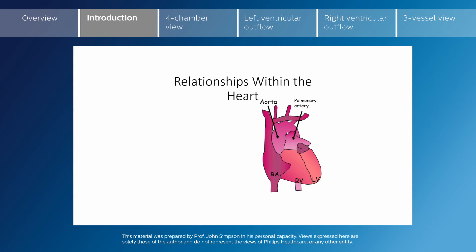The left atrium cannot be seen because it is behind the right ventricle and right atrium. We can also see that the pulmonary artery arises most anteriorly, with the aorta being tucked in behind, such that the pulmonary artery is anterior and to the left at its point of origin from the heart.